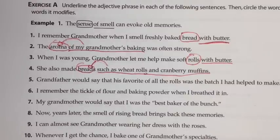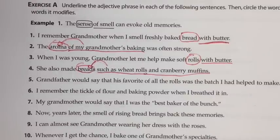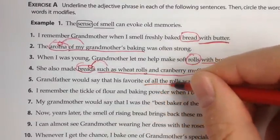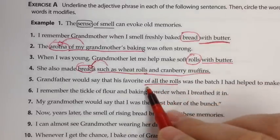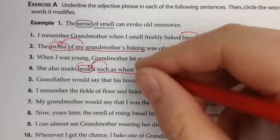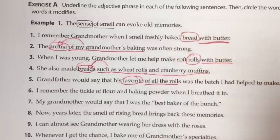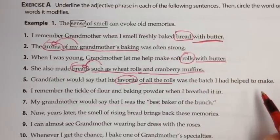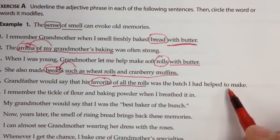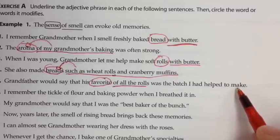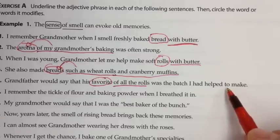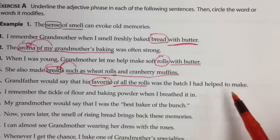Number five: grandfather would say that his favorite of all the rolls was the batch I had helped to make. Here we have a prepositional phrase that describes which favorite we're talking about. At the end of this sentence it says 'to make' — 'to' is often a preposition, but 'to' will not be a preposition if the word following it is a verb. This is called an infinitive, and 'to verb' is not a prepositional phrase.